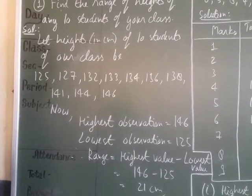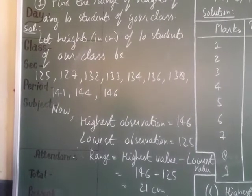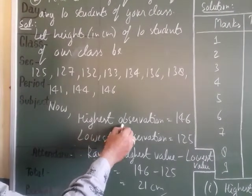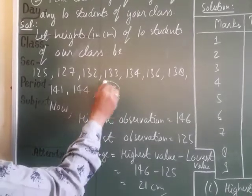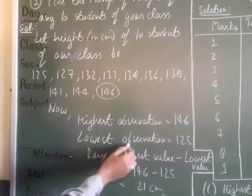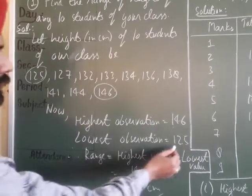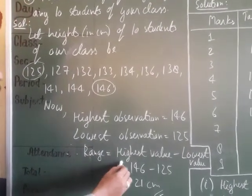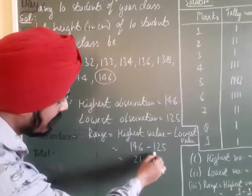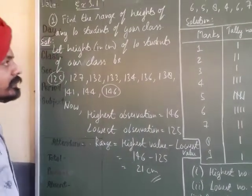Now you have to find the range. The formula for range is: highest value minus lowest value. The highest observation is 146 and the lowest is 125. So range = 146 minus 125 = 21 centimetres.